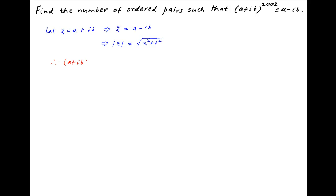Now, we are given the equation a plus ib raised to the power 2002 is equal to a minus ib. And this can be written as z raised to the power 2002 is equal to the conjugate of z.